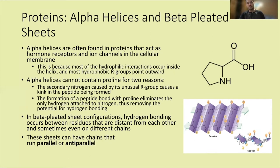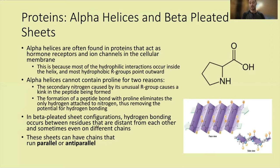In beta pleated sheet configurations, hydrogen bonding occurs between residues that are distant from each other and sometimes even on different chains — unlike alpha helices where nearby residues bond to form the coil. Beta pleated sheets can have chains that run parallel, usually two separate peptide chains running in the same direction, or anti-parallel, which typically occurs with the same peptide chain wrapping around like a snake meandering back on itself.